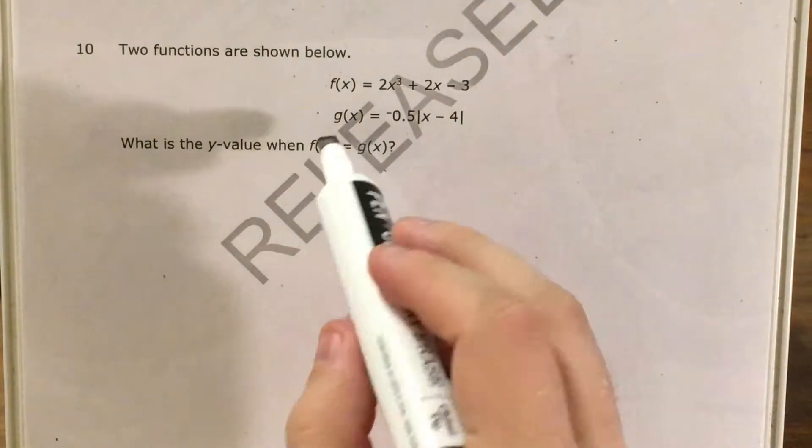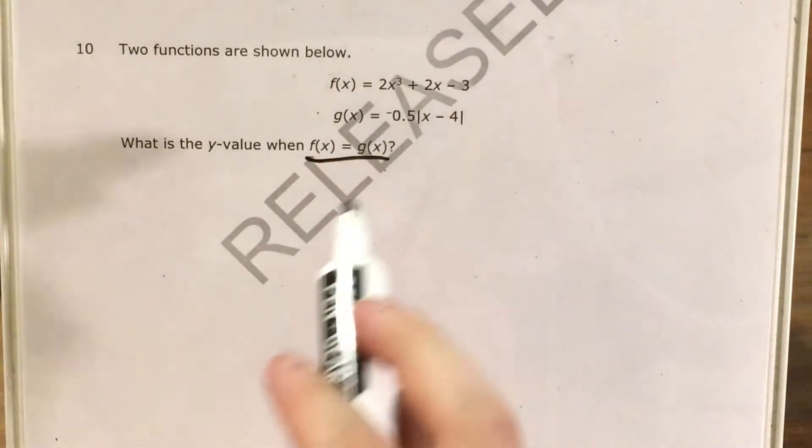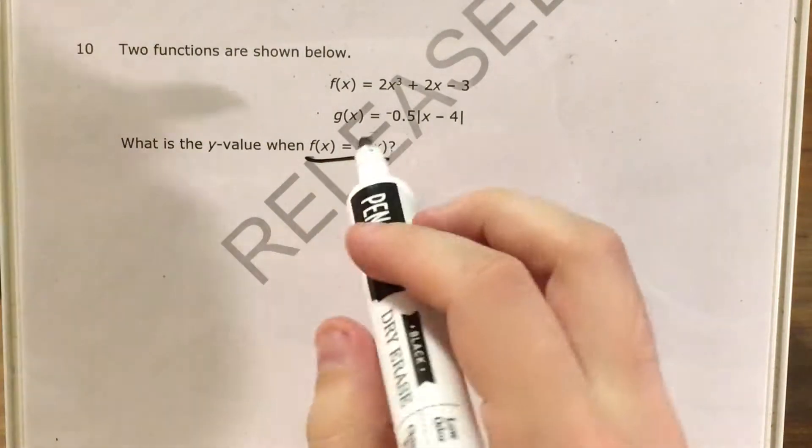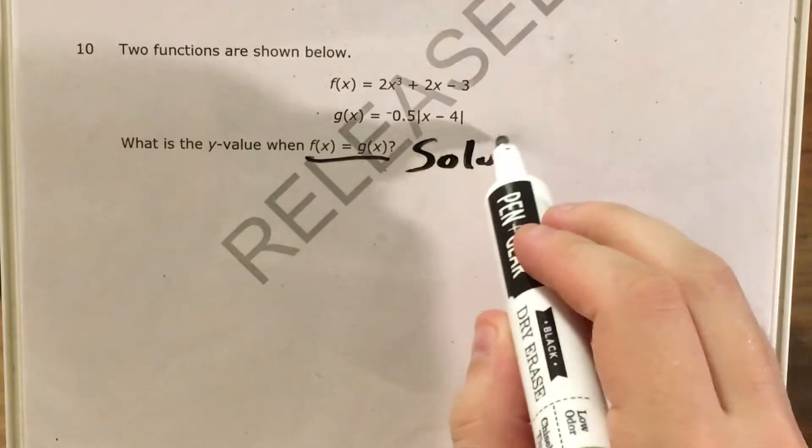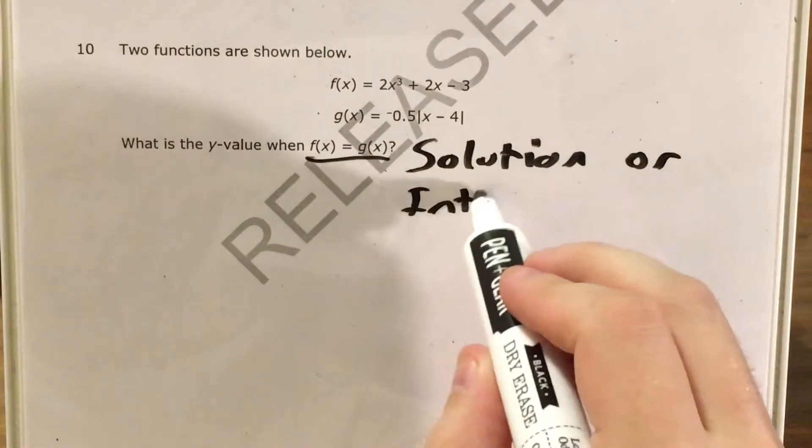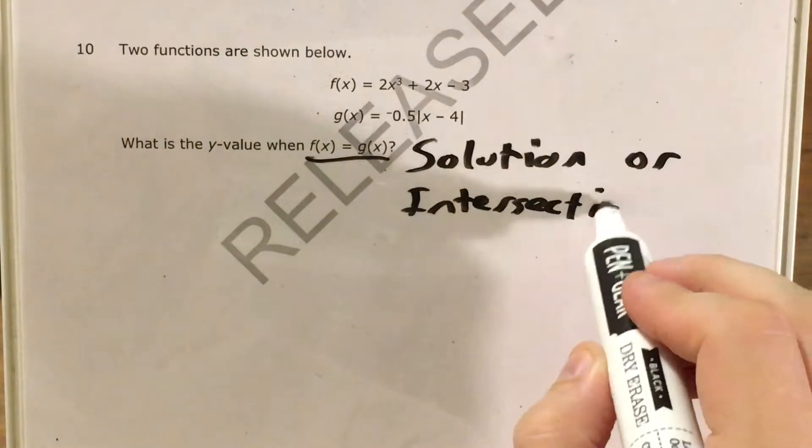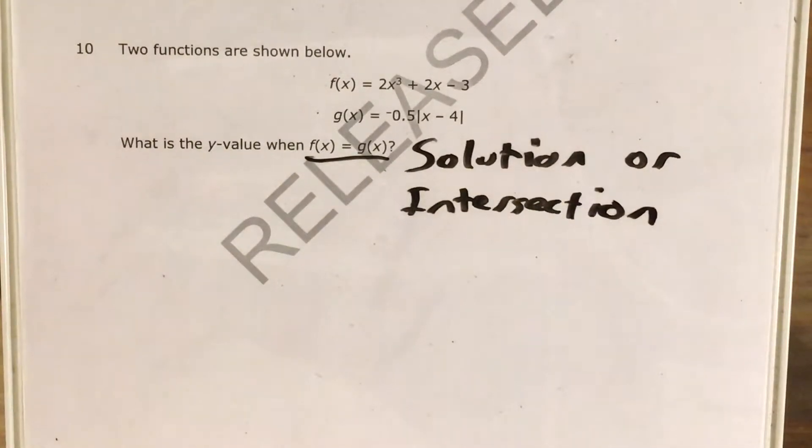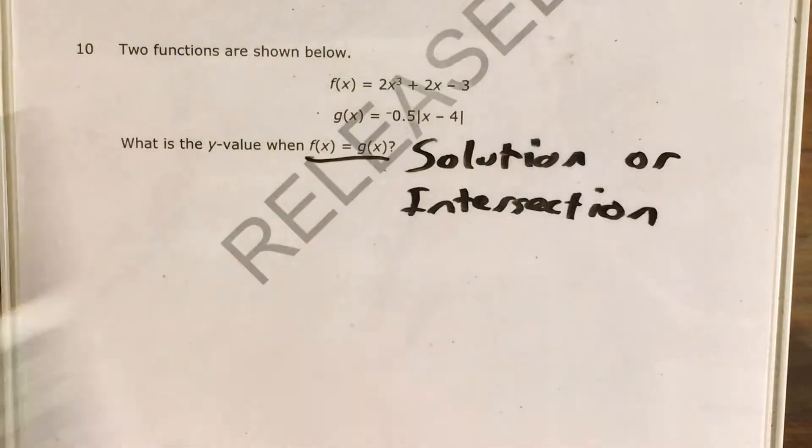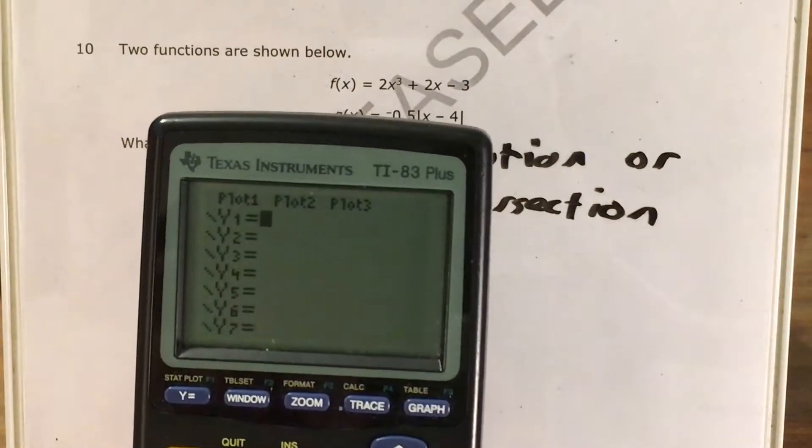Alright, so first, whenever I see f(x) equals g(x), and I see the two functions it gives me, there's a big buzzer going off in my head telling me that we're looking for a solution or an intersection. Now, given that one of these is a cubic function and one of these is an absolute value function, I'm going to say we want to use the calculator to find an intersection. So let's get our calculators out.